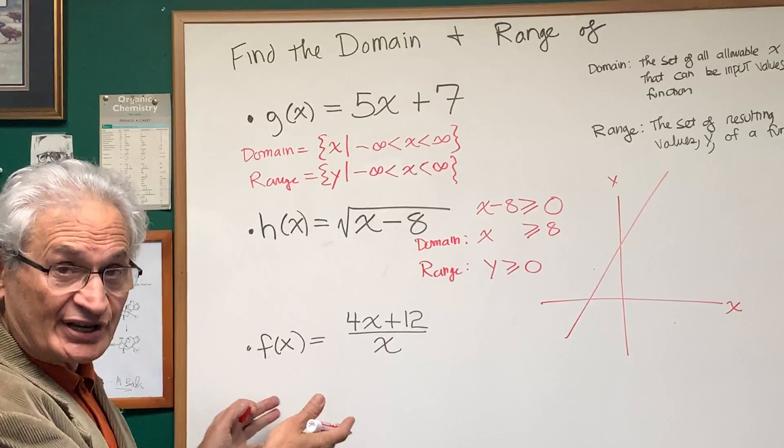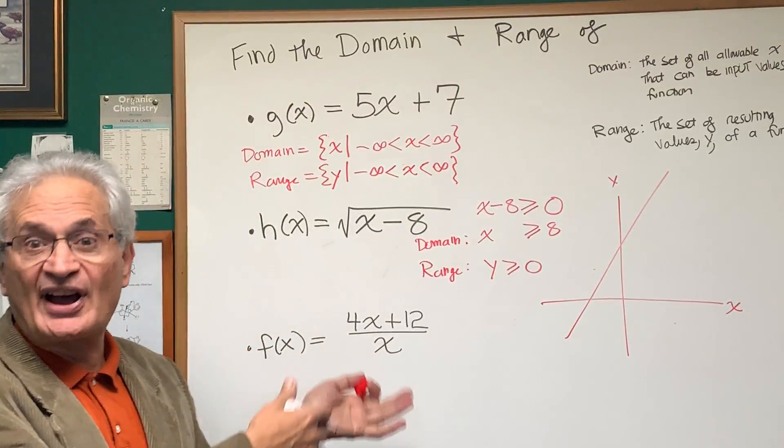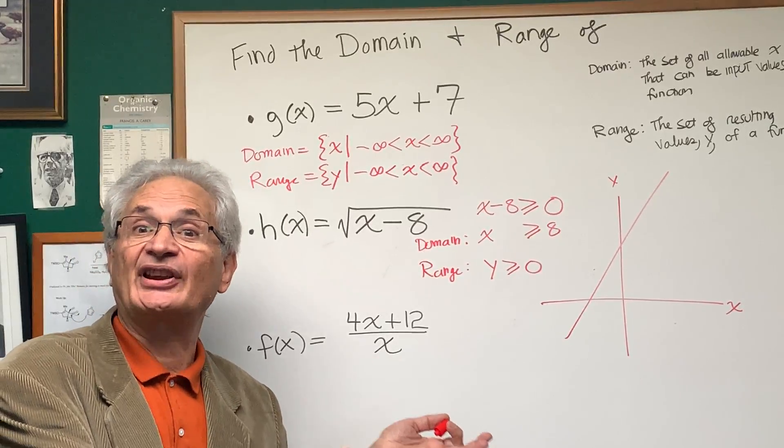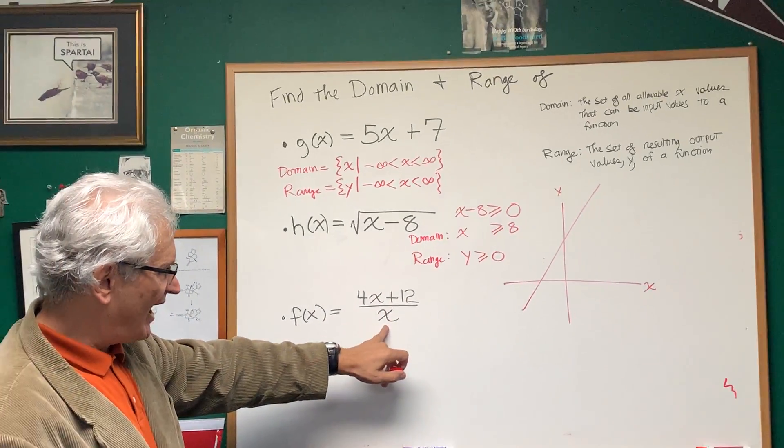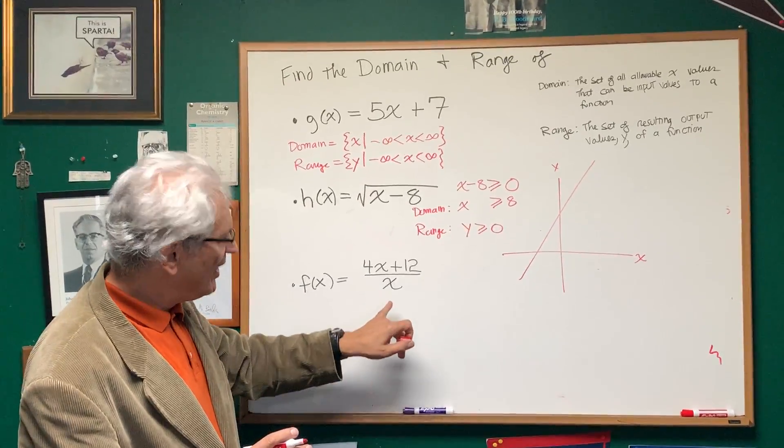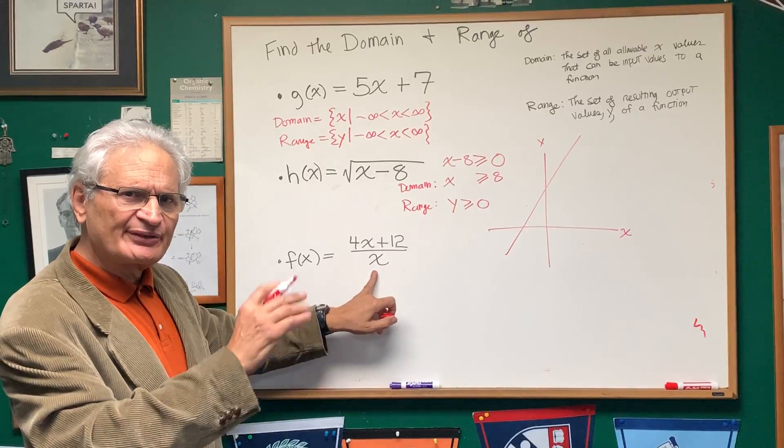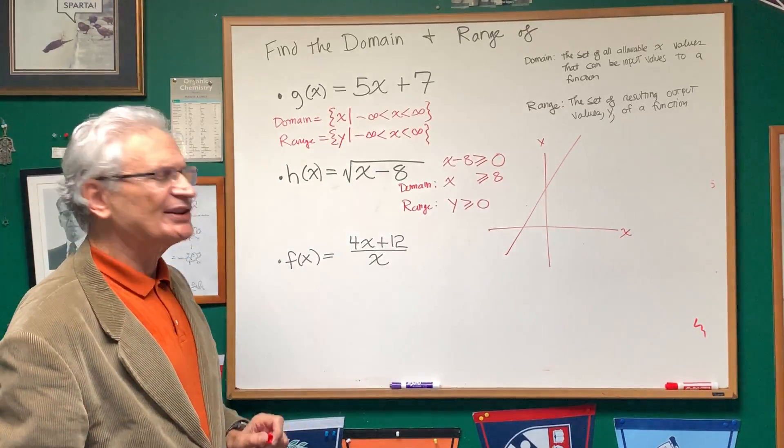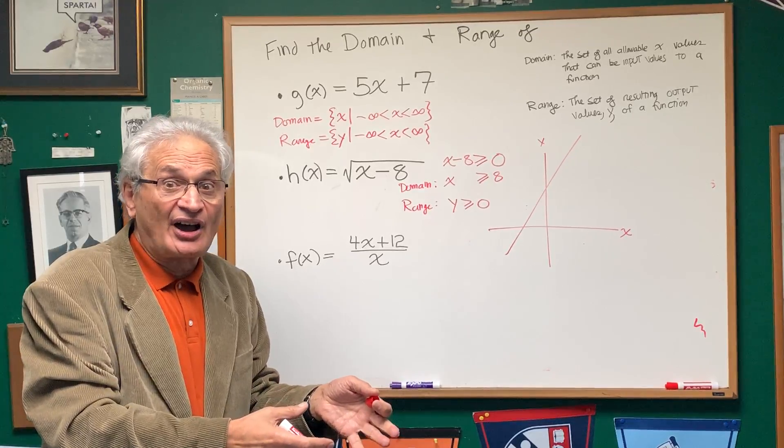Now let's look at a third example where we're going to have to also examine the input value and the output value from the context of the algebra. We have 4x plus 12 divided by x. Now right away, if you're a good algebraist you should know there's one x value of all the x values, positive, negative, 0, there's one x value that cannot be input into this equation. Negative values are fine. You can put in negative 1, negative 5, negative 10.